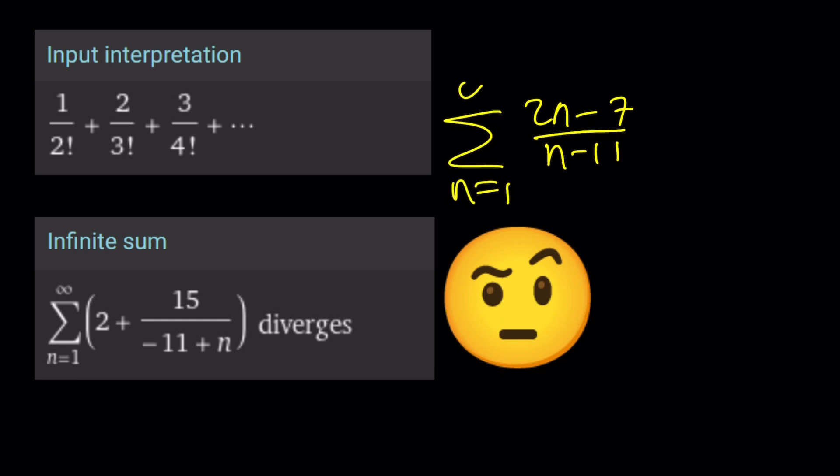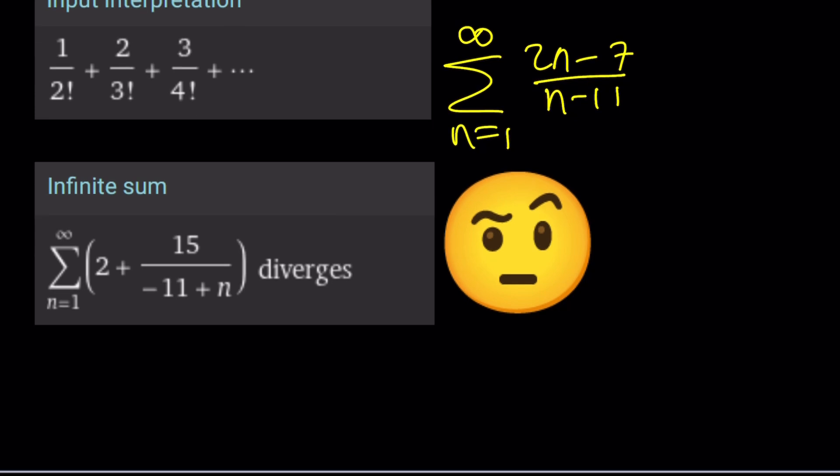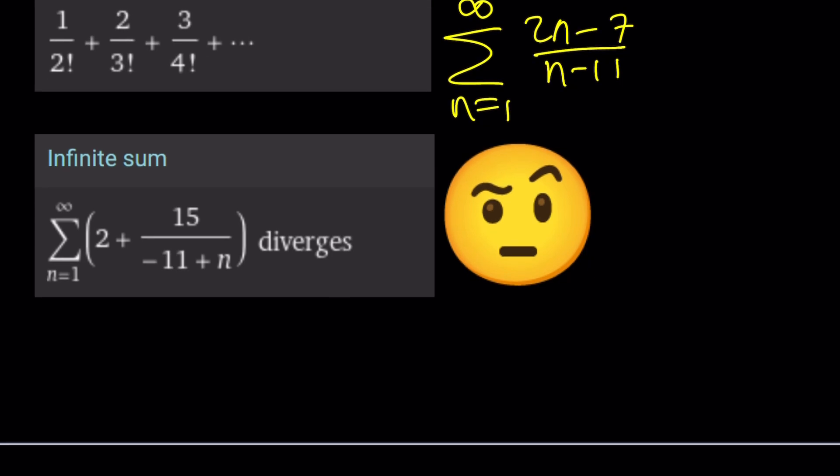If you take a look at the sum, this is actually pretty interesting. If n equals 1, this becomes negative 5 over negative 10, which is 1 half. If n equals 2, this is negative 3 divided by negative 9, which is 1 third. And when I replace n with 3, it gives me negative 1 over negative 8, which is 1 over 8. It gives me the same sum, but it's not going to go on forever.